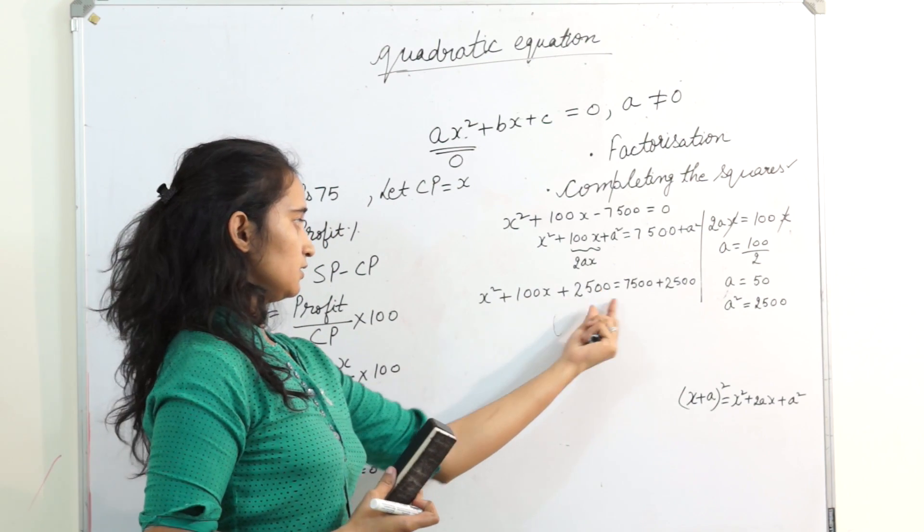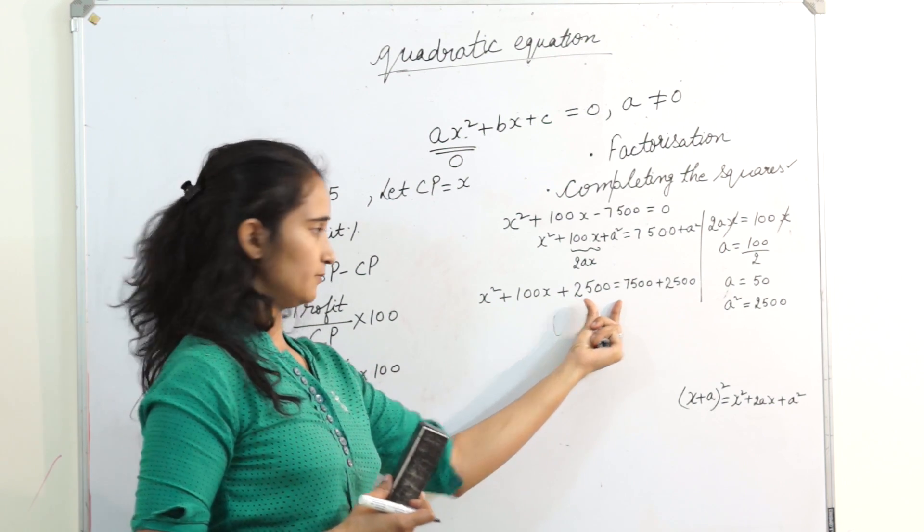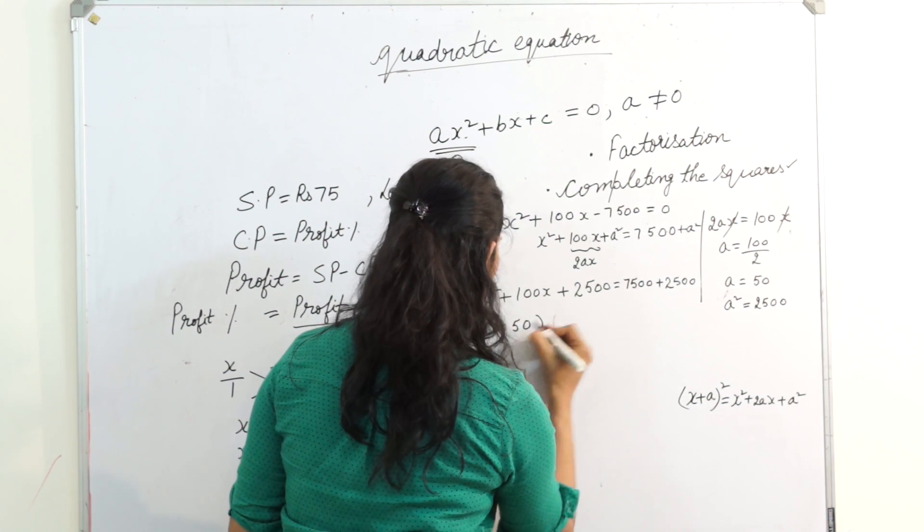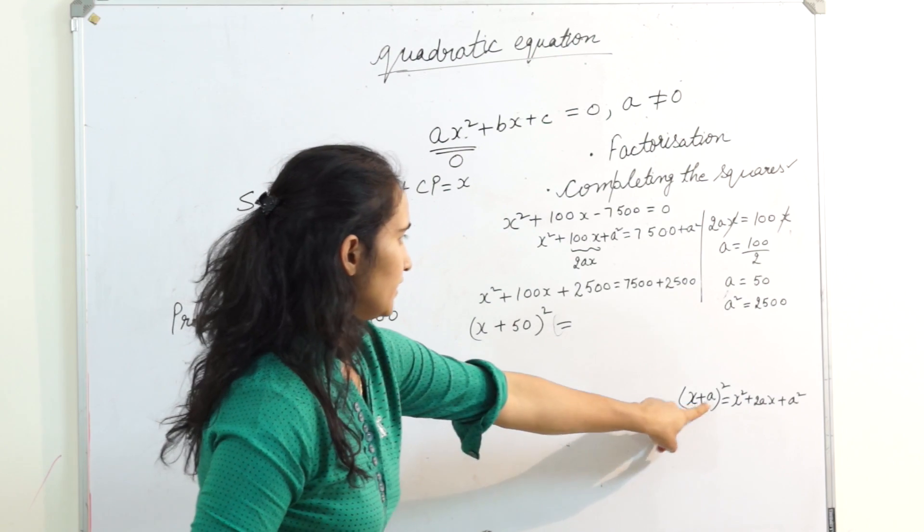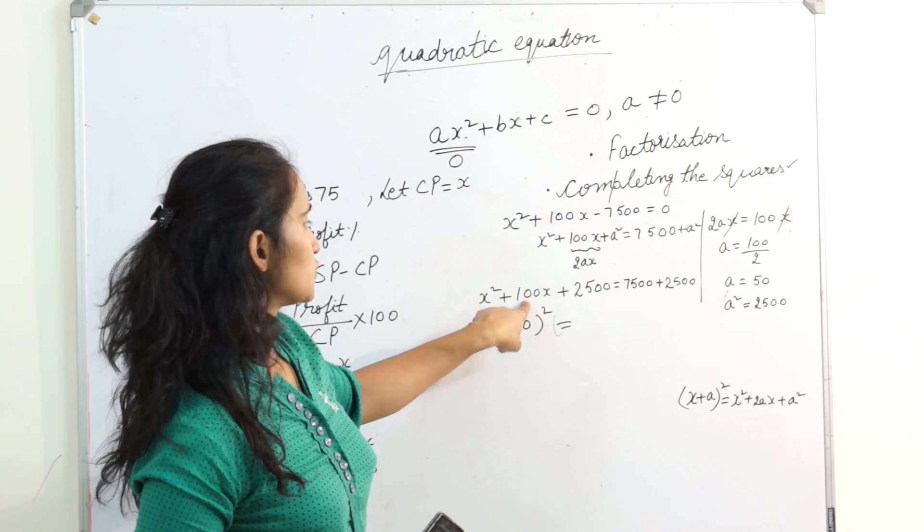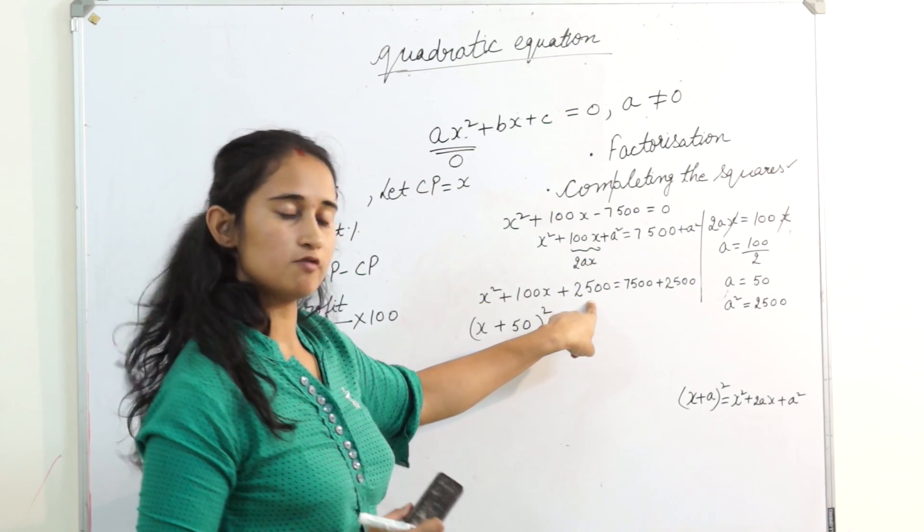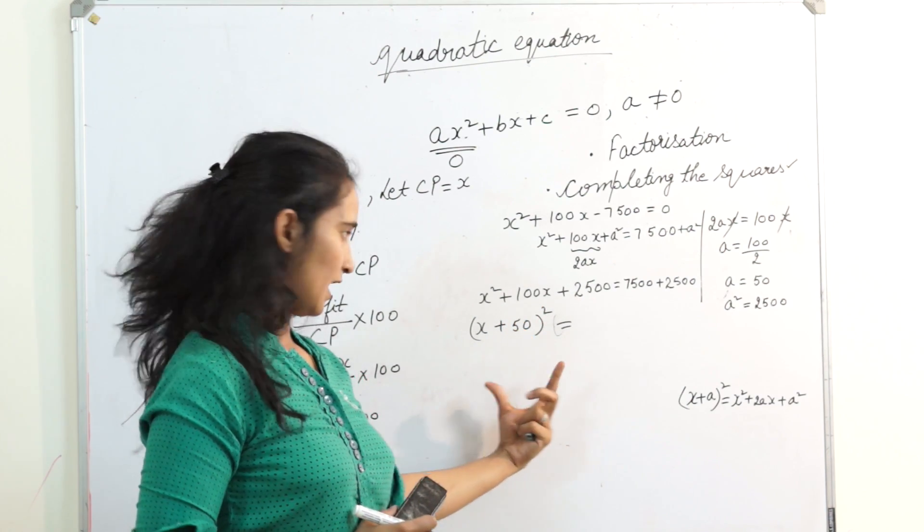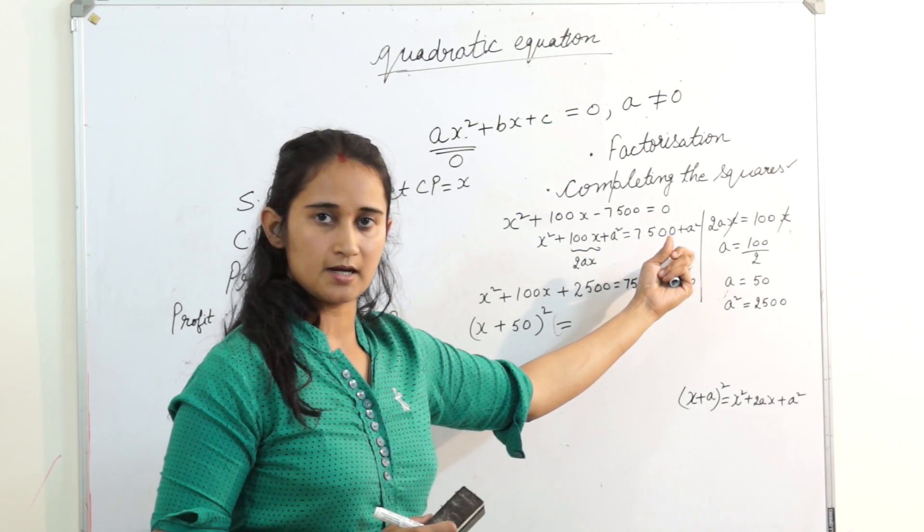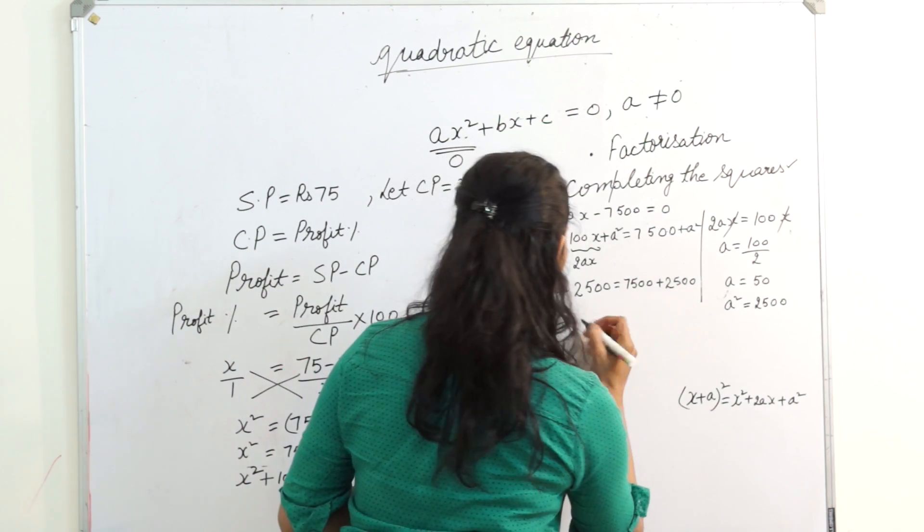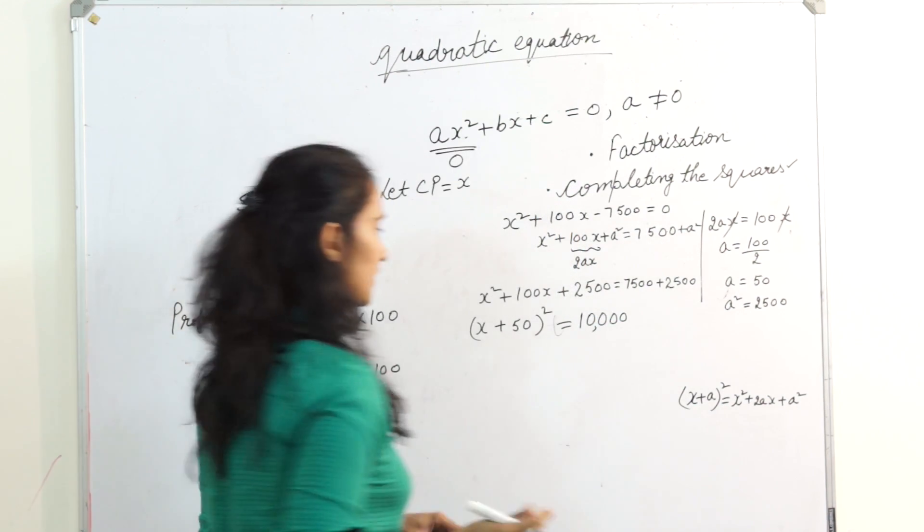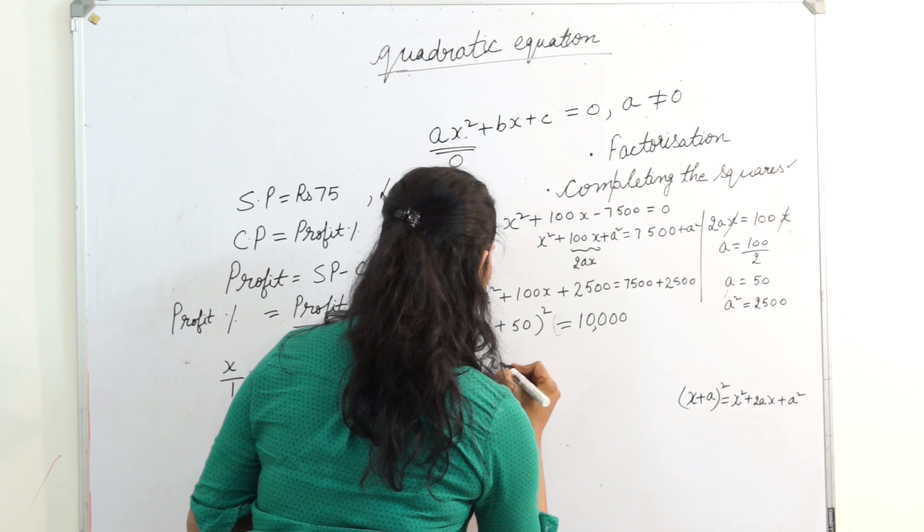So can you see? 2,500 is 50 square. Can I write it as x plus 50 whole square? a is 50. x plus a whole square: x square plus 2ax plus a square. I am able to complete my squares. Yes, it fulfills the condition because I am adding a square on both sides. So 7,500 plus 2,500, 10,000.